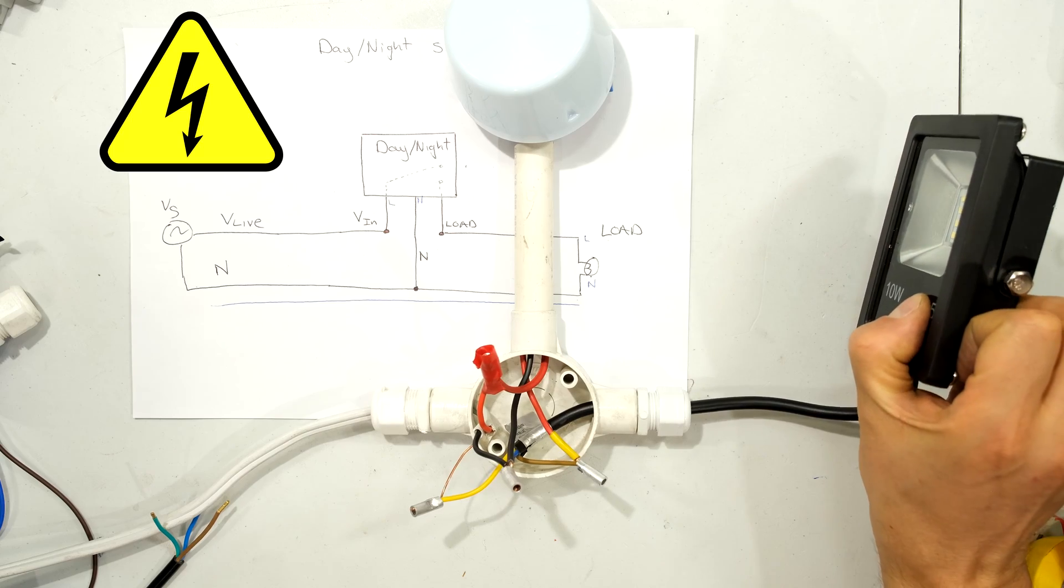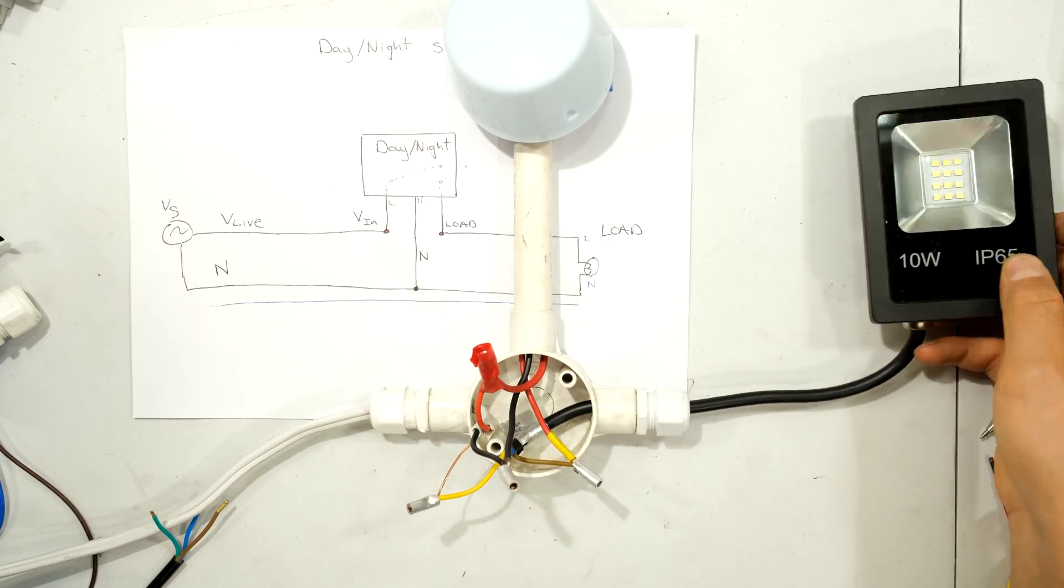So the light has gone off because now it has enough lumens that are present at the day-night sensor. Very important when you do mount it, do not face the light onto the sensor. Otherwise, it will oscillate.